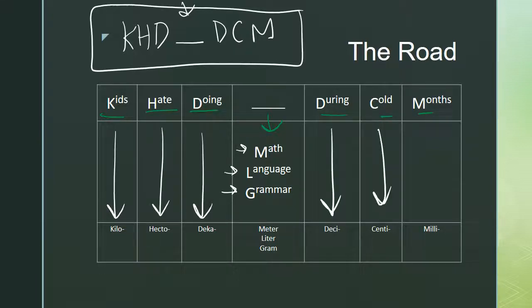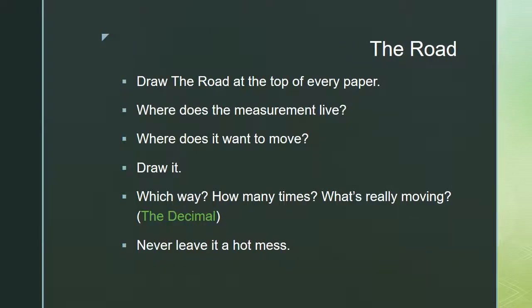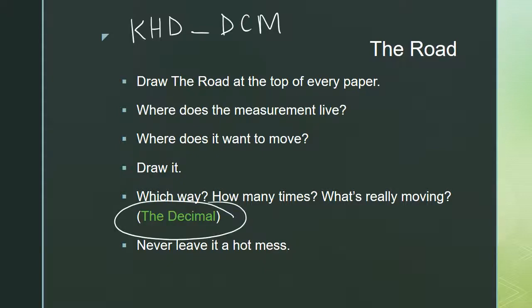Each of those words is an acronym for one of the metric measurements: Kilo, Hecto, Deca, the unit, Deci, Centi, or Milli. So the steps are: first, draw the road at the top of your paper — 'Kids hate doing something during cold months.' Then ask yourself: Where does the measurement live? Where does it want to move? Draw it moving. Ask which way, how many times, and what's really moving. The thing that's really moving is always the decimal, and you never leave your answer a hot mess.